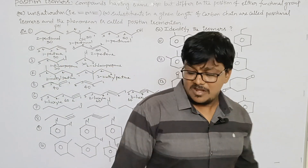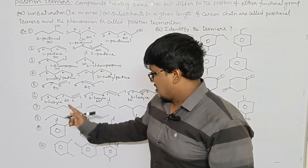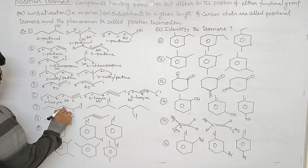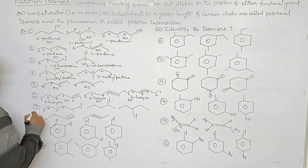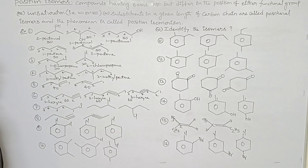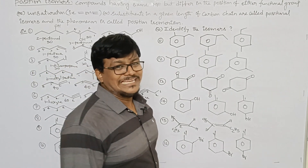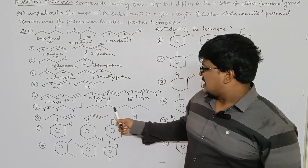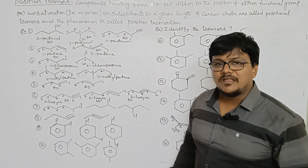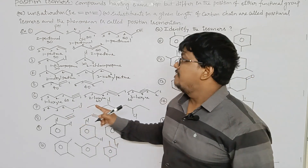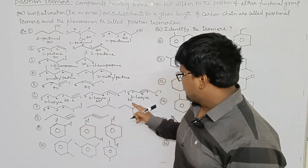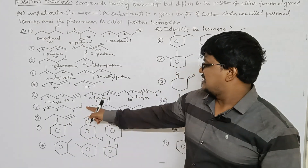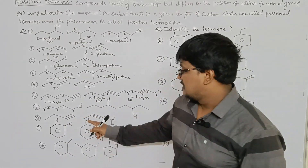The seventh example: a compound with 5 carbons. The three compounds are named 1-chloropentane, 2-chloropentane, and 3-chloropentane. All have the same isomeric number and the same parent chain, differing only in the position of the chlorine substituent. Hence, these three are positional isomers.